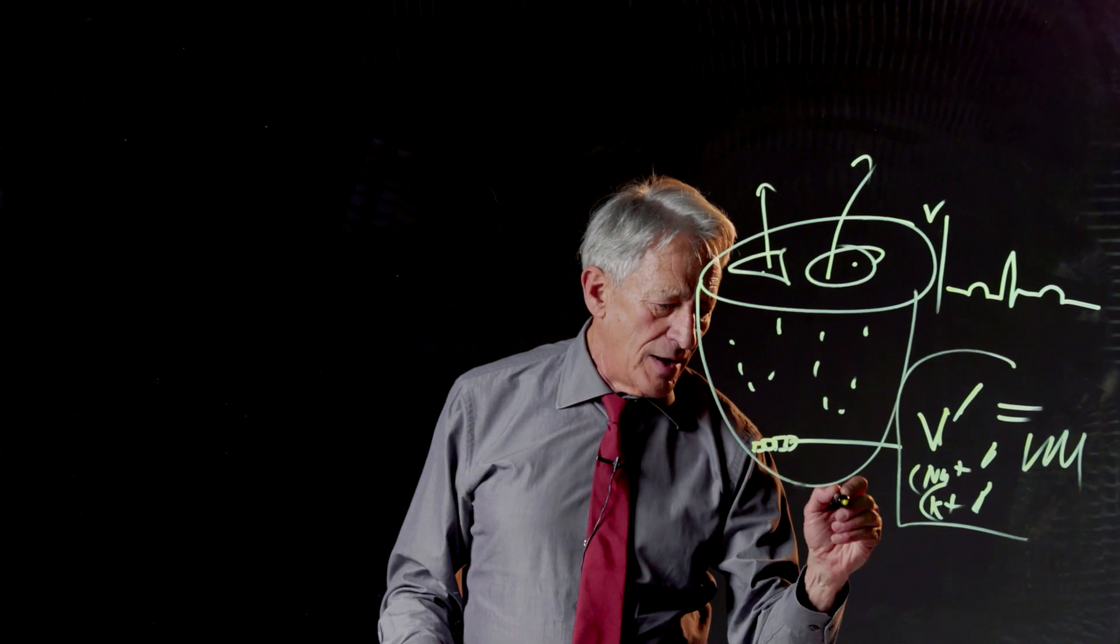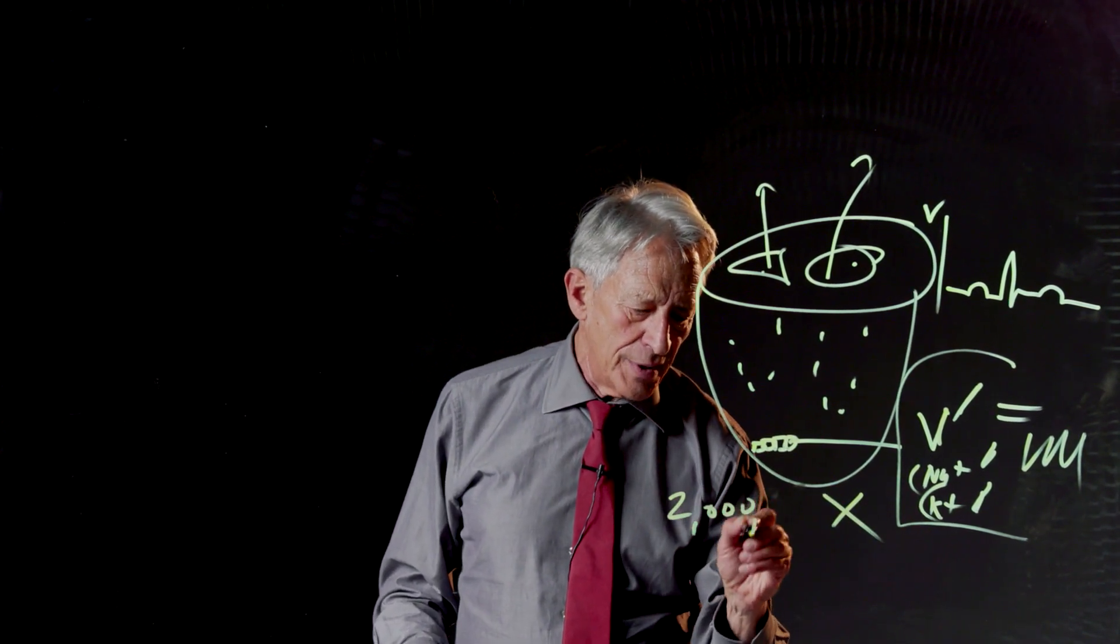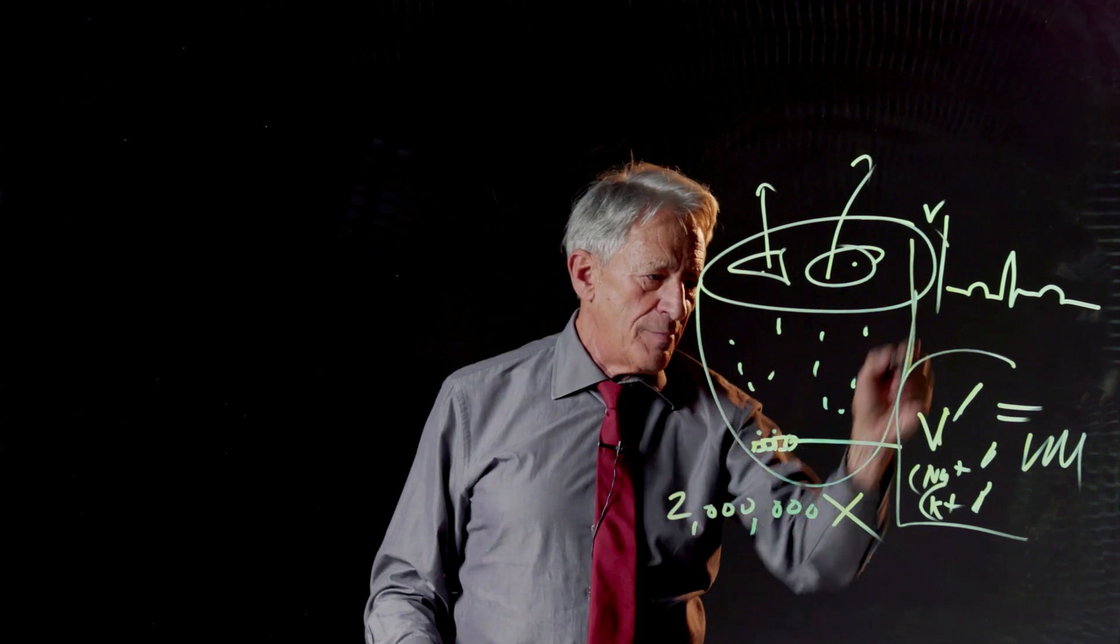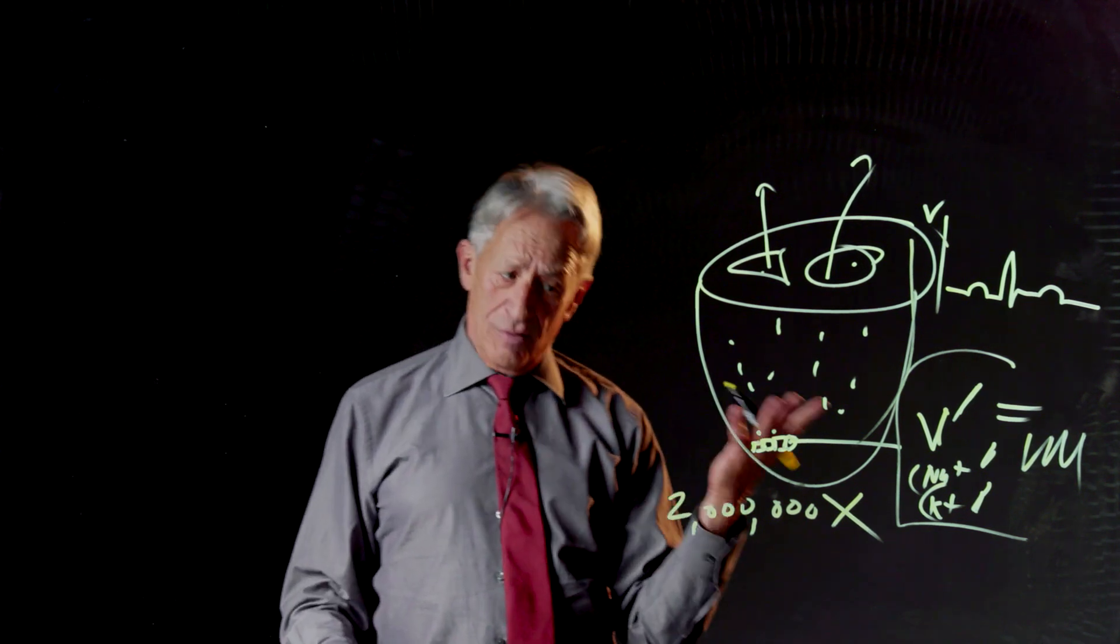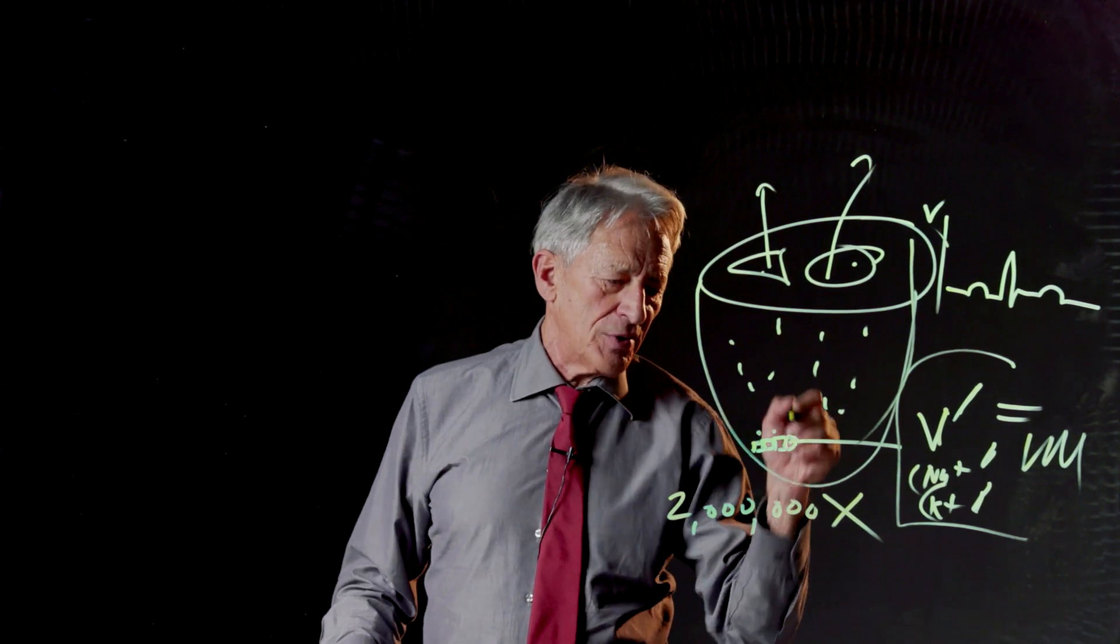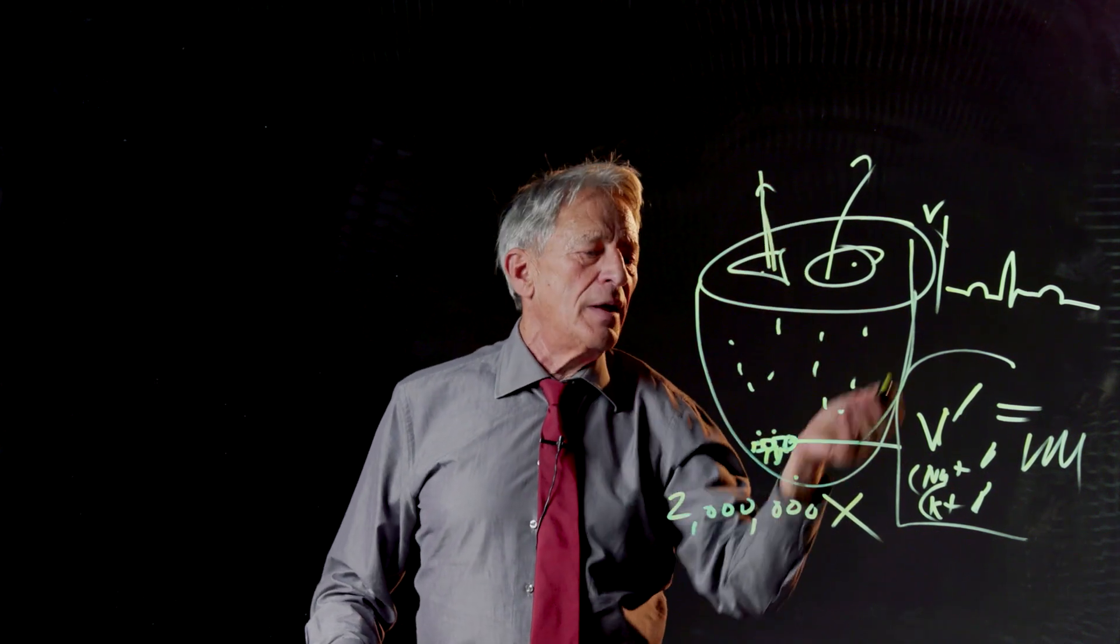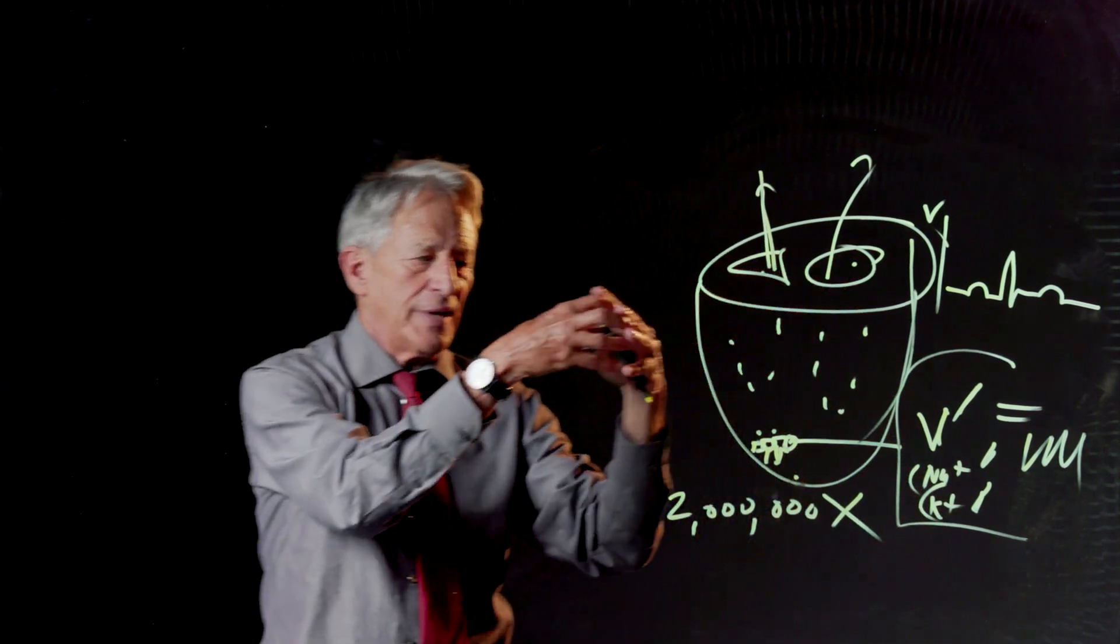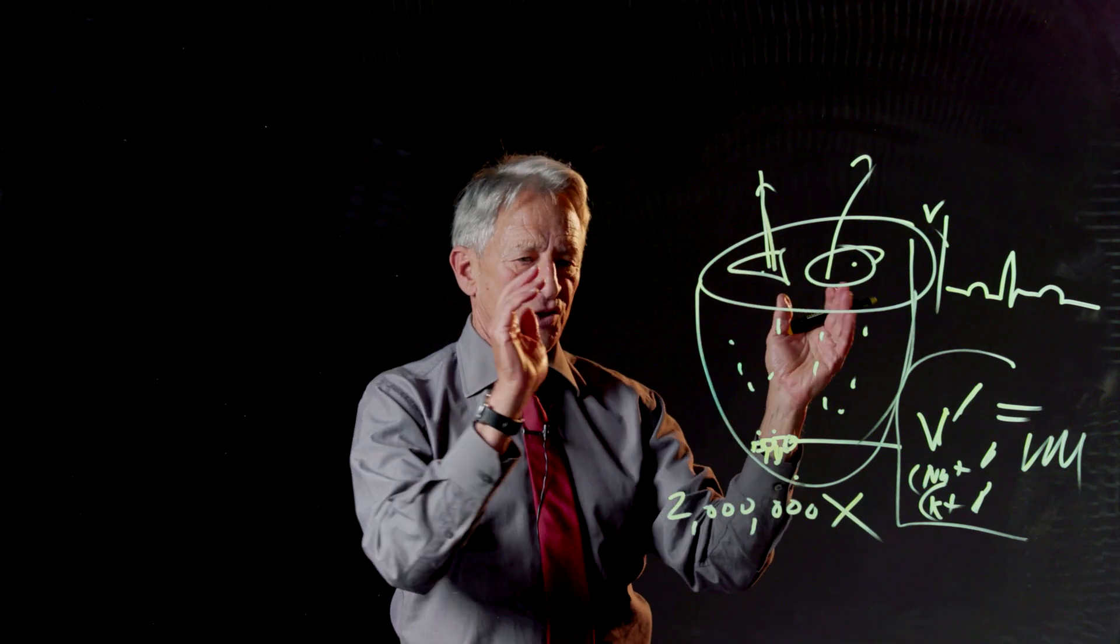And then we take that cell and we multiply it by around 2 million to make 2 million grid points that make the solid heart. And then we use Euler's method to calculate what happens when an impulse comes down and the heart goes through a wave of electrical activation, and therefore a wave of contraction.